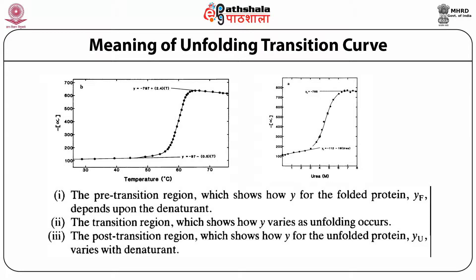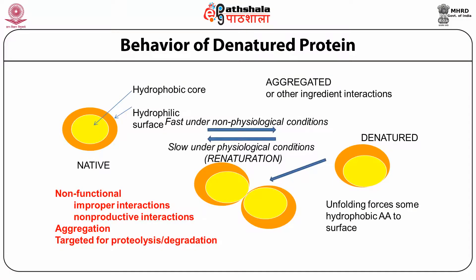The unfolding transition curve has three regions: the pre-transition region, showing how the y-value of the folded protein (yf) depends on denaturant; the transition region, showing how y varies as unfolding occurs; and the post-transition region, showing how the y-value of the unfolded protein (yu) varies with denaturant. Upon denaturation, hydrophobic residues become exposed, leading to hydrophobic interactions and aggregate formation. Denatured proteins are non-functional due to improper interactions and are targeted for proteolytic degradation.